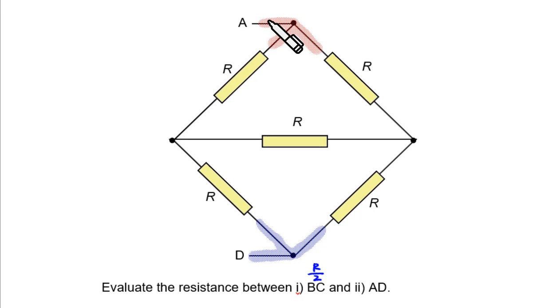why don't we think about how the current travels through this resistor network? So if we start off with current I here, how do you think this current will split here? This resistor network looks very symmetrical. So I think there's no reason why the current shouldn't split half-half.